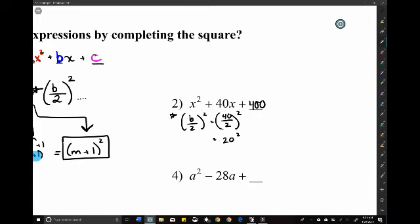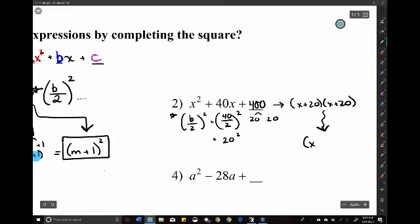And then, from here, you can think, well, if I were to factor this, x squared, so factors of 400 that add to 40 are both 20 and 20. So really, we have x plus 20 and x plus 20, and you can write it as x plus 20 squared. That's it.